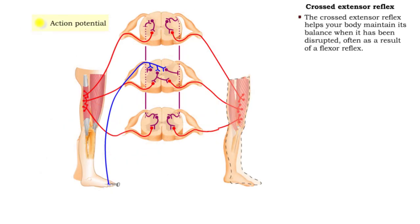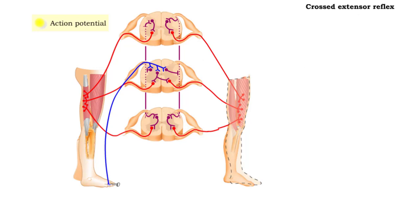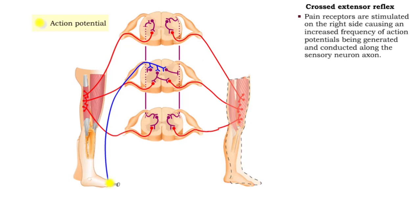The crossed extensor reflex helps your body maintain its balance when it has been disrupted, often as a result of a flexor reflex arc. Like the flexor reflex, it is polysynaptic and intersegmental, but differs in that it is contralateral. The crossed extensor reflex operates in the following manner.